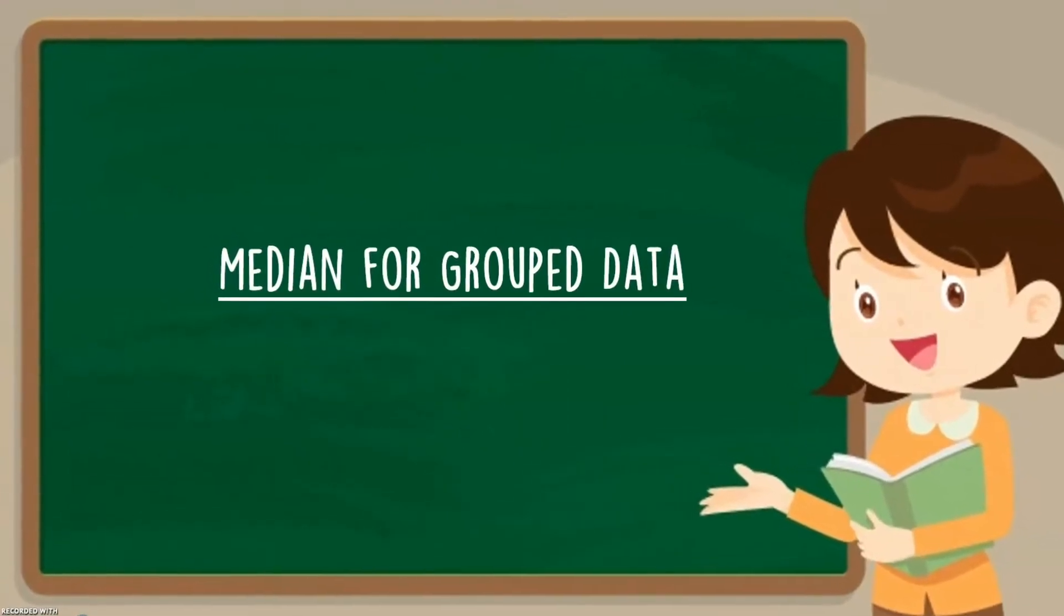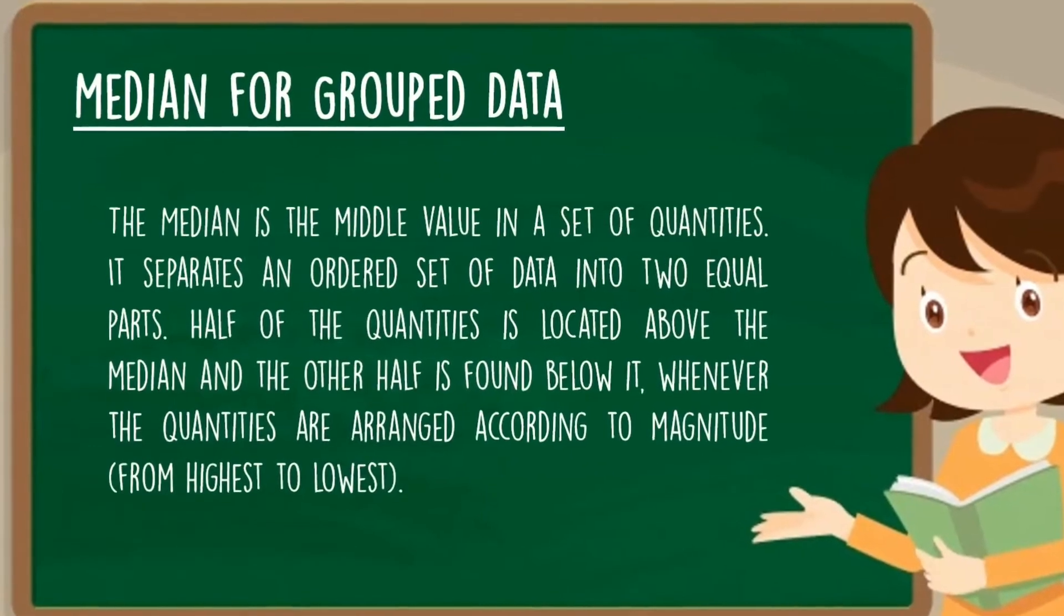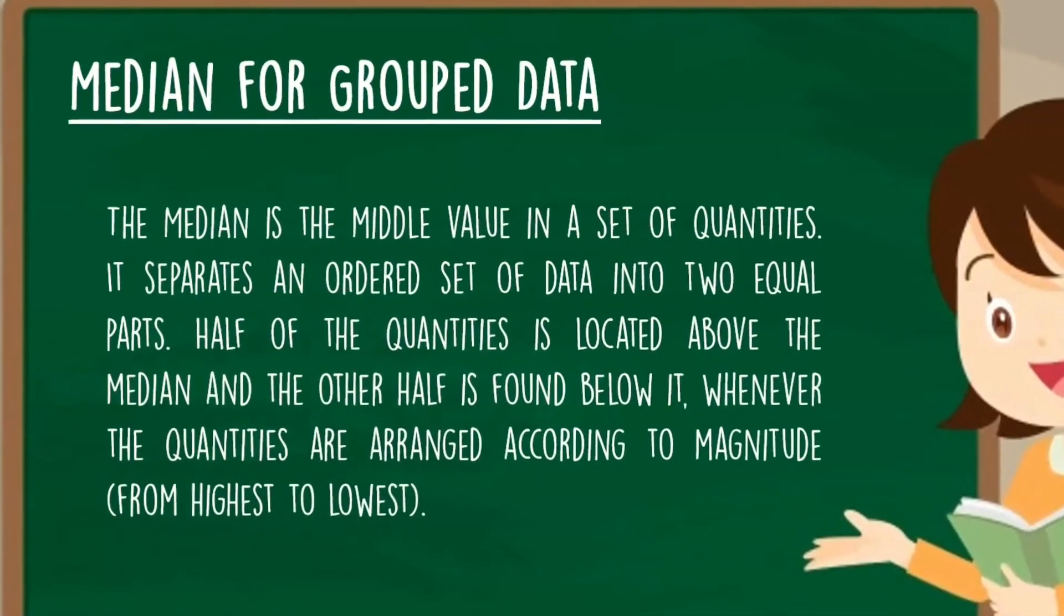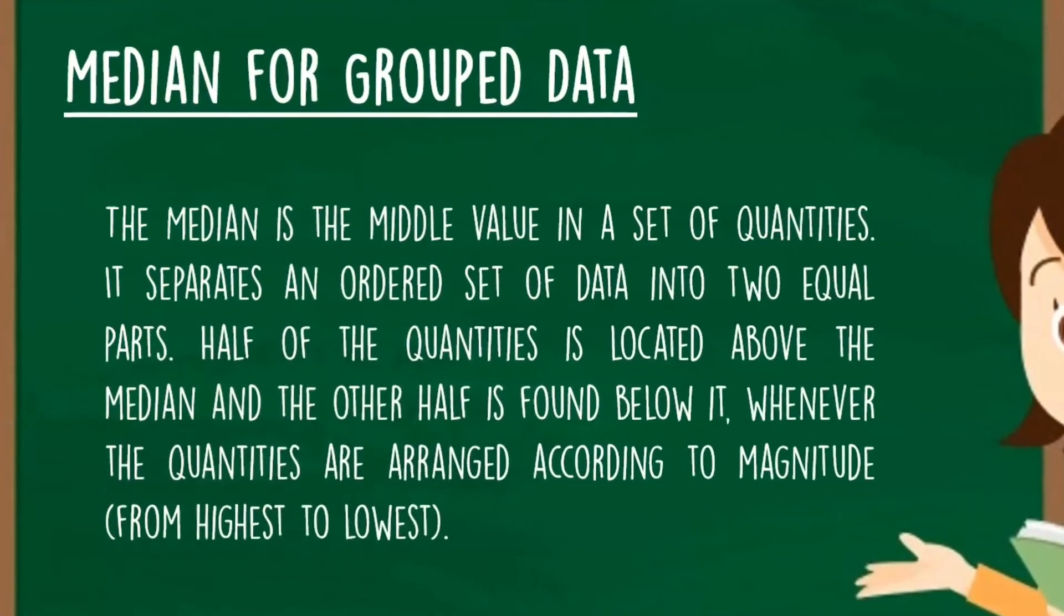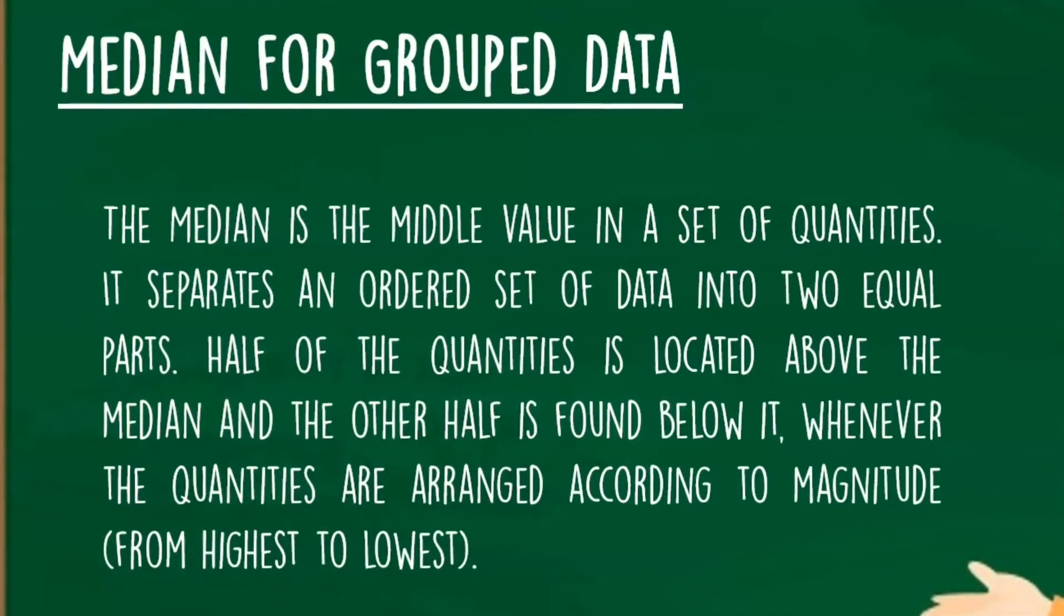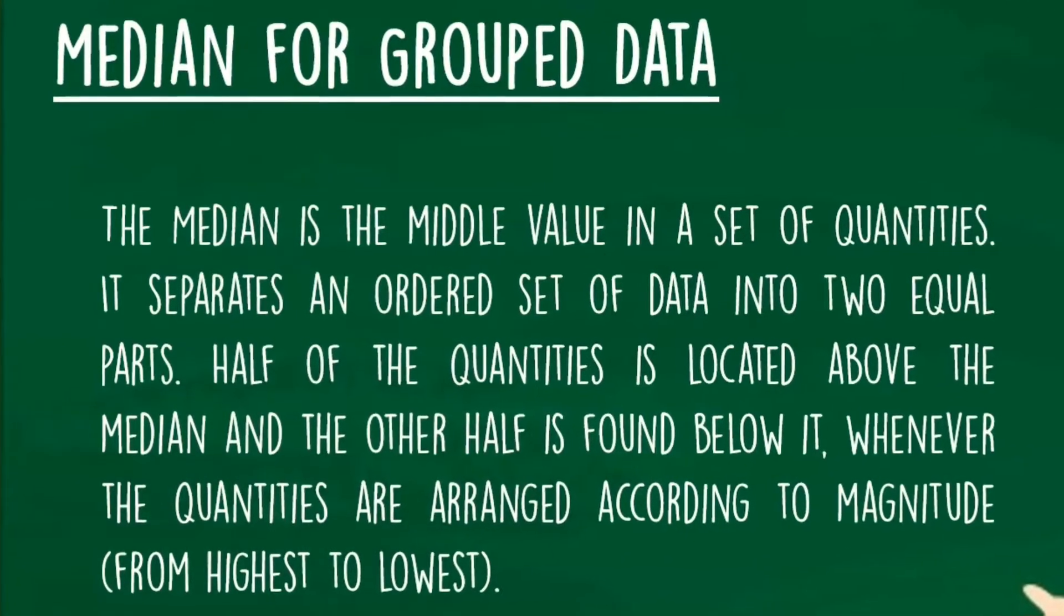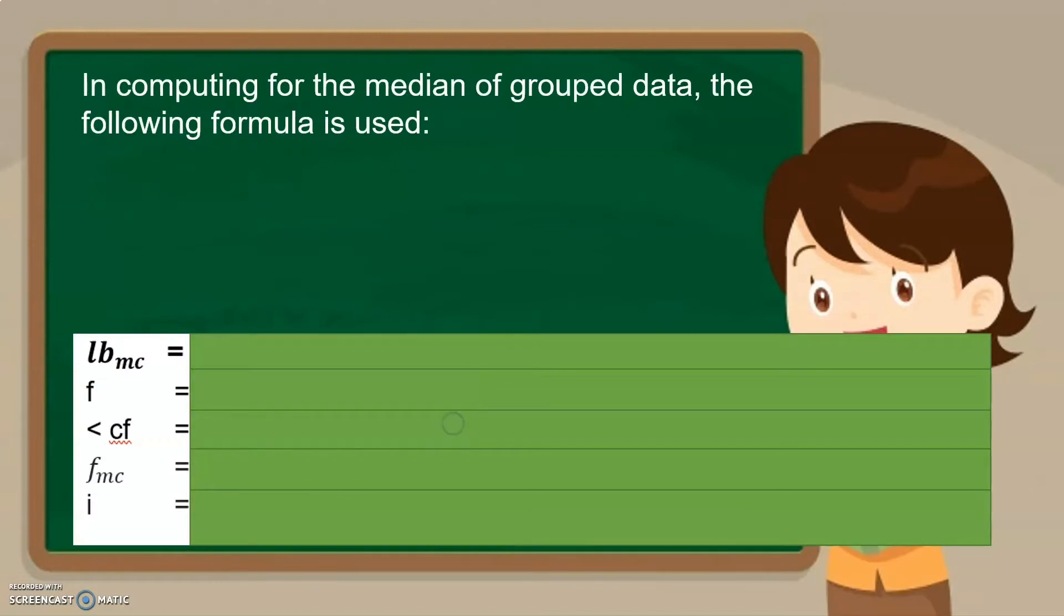Okay now, let us proceed with the median for group data. The median is the middle value in a set of quantities. It separates an ordered set of data into two equal parts. Half of the quantities is located above the median and the other half is found below it, whenever the quantities are arranged according to magnitude from highest to lowest. So, in computing for the median of group data, the following formula is used.